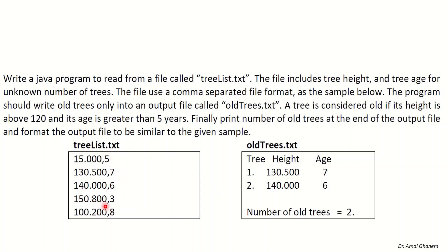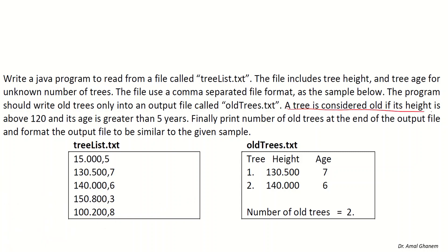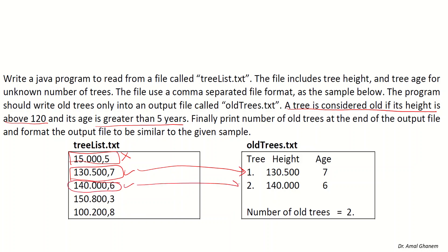We will not write all the details from the first file — only the details of old trees. A tree is old if height is above 120 and age is greater than 5 years. For the first line, height is not greater than 120, so it doesn't qualify. The second line has height 130.5 and age 7, so it is an old tree and we write it. The next line is also an old tree. One line has height above 120 but age not greater than 5, and the last line doesn't satisfy the condition either. We end up with only two trees, so the output file ends with 'Number of all the trees is 2'.